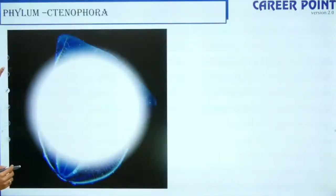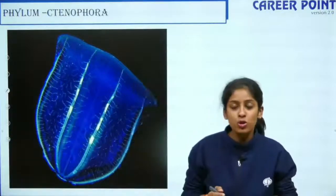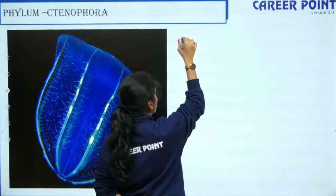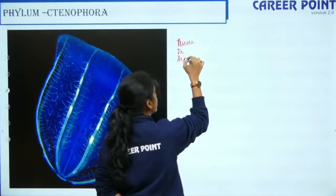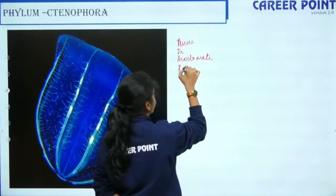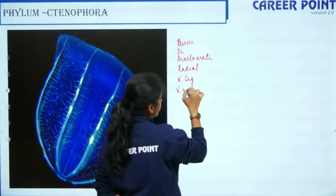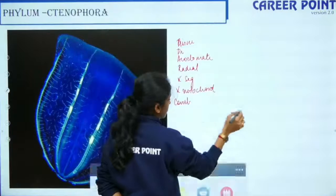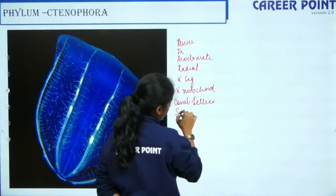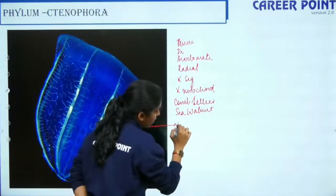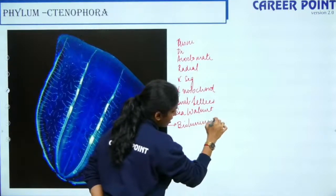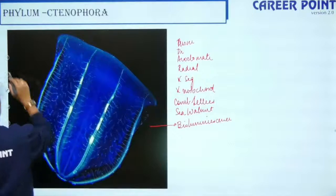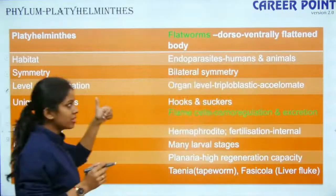The next phylum is Ctenophora. There are only two examples: Ctenoplana and Pleurobrachia. They are tissue level organization, diploblastic, acoelomate, with radial symmetry, no segmentation, and no notochord. They are also known as comb jellies or sea walnuts. What is significant about them is that they are bioluminescent — they can emit light even in the dark.